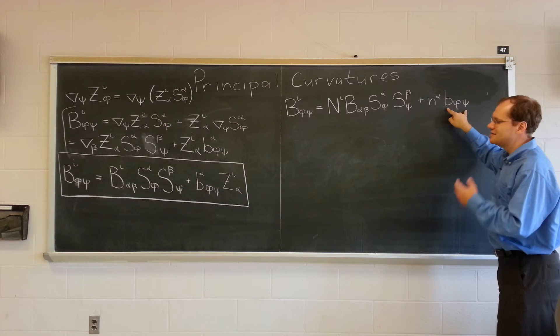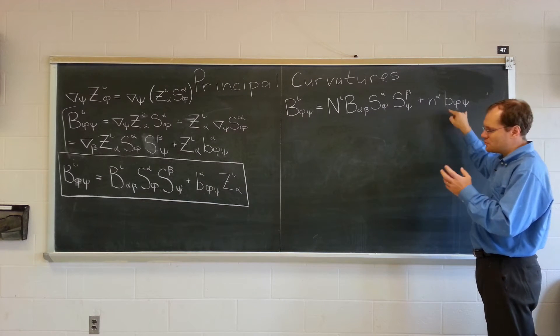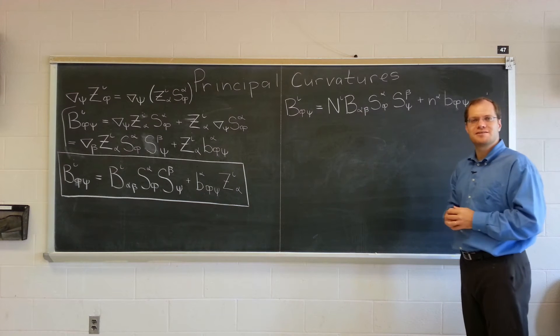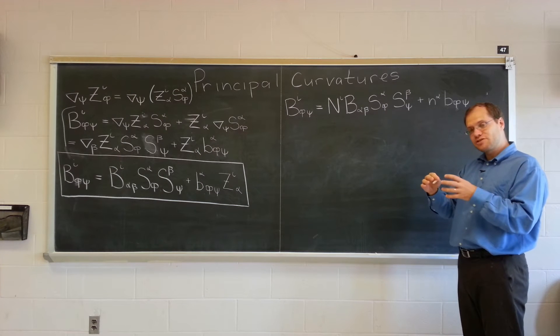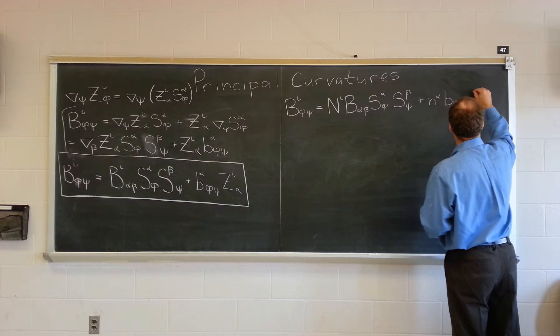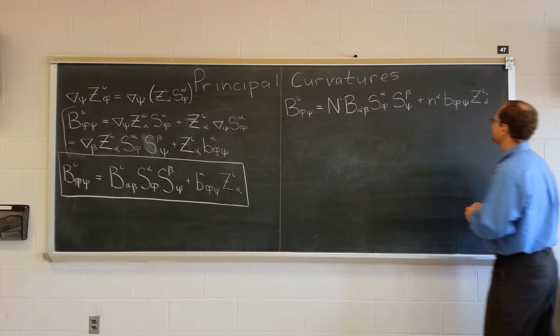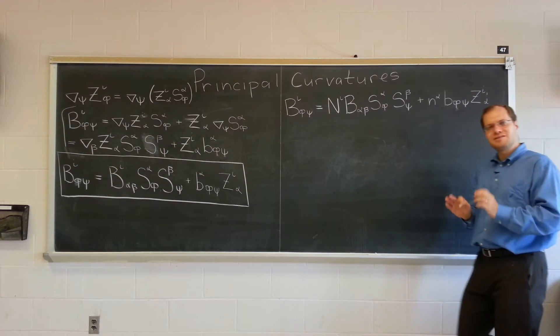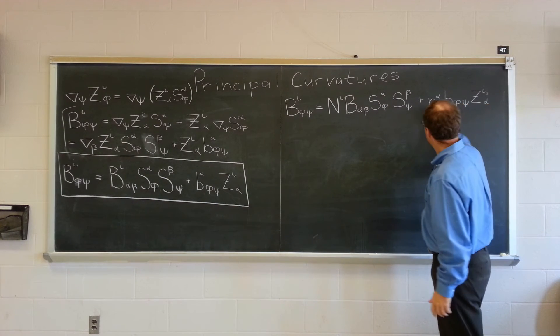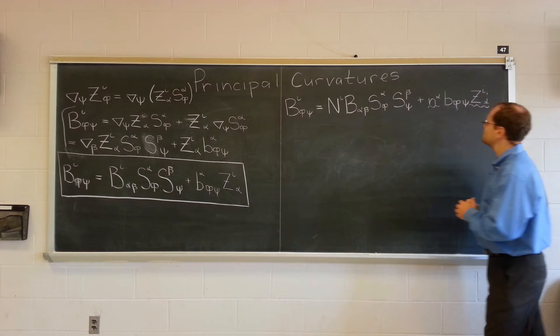So little N alpha times B phi psi, and this is also a very familiar object. That's the conventional curvature tensor. It's just that it works for the curve surface system. It's the curve as a hypersurface embedded in the surface, times Z I alpha. Now, something very interesting is happening here.